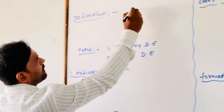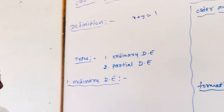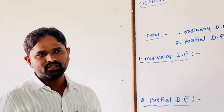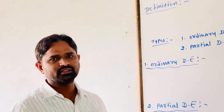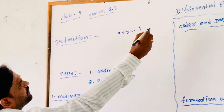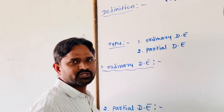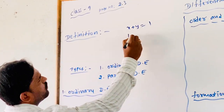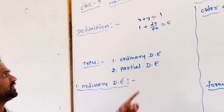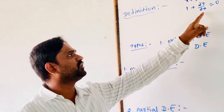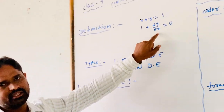For example, x plus y is equal to 1 is a linear equation in two variables. If we differentiate the given equation with respect to x or y, we will get a differential equation. Differentiating with respect to x, we get 1 plus dy by dx is equal to 0. Here the given equation is transformed into dy by dx form, so it is known as a differential equation.